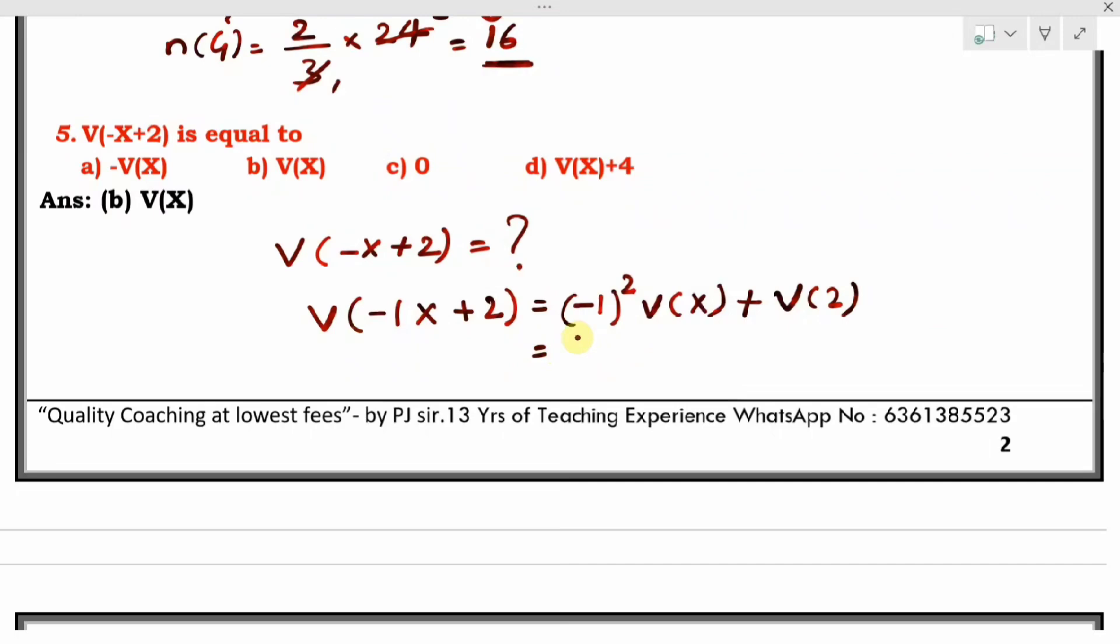Equals (-1) squared is 1, times variance of X as it is, plus variance of 2. Variance of any constant is 0. We know it already. If it is expectation of a constant, it is constant again. But variance of a constant, any number will become 0.